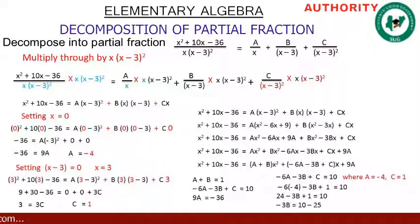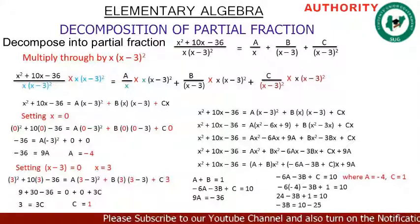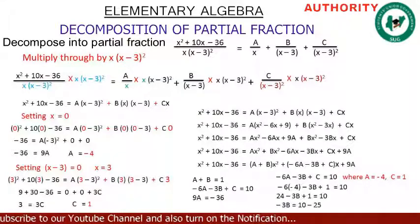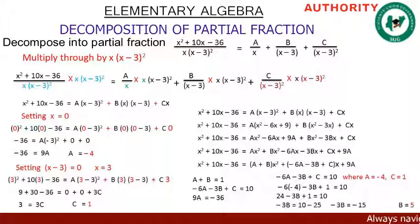So: minus 6 times (minus 4) minus 3B plus 1 equals 10. That gives 24 minus 3B plus 1 equals 10. Taking 24 and 1 to the other side: minus 3B equals 10 minus 25, which gives minus 3B equals minus 15. Dividing both sides by minus 3, B equals 5.